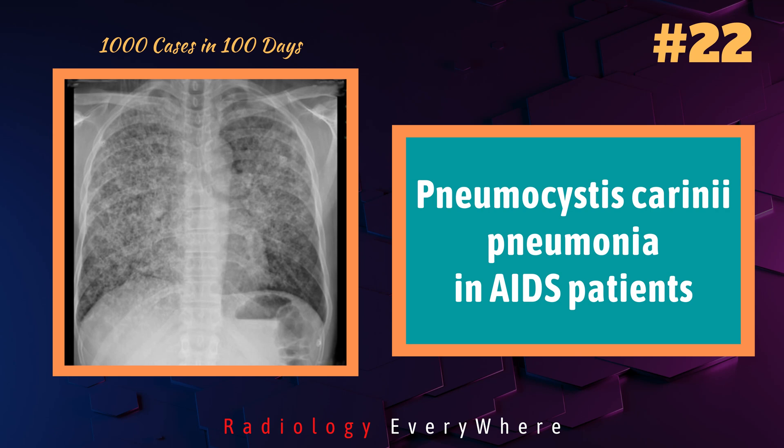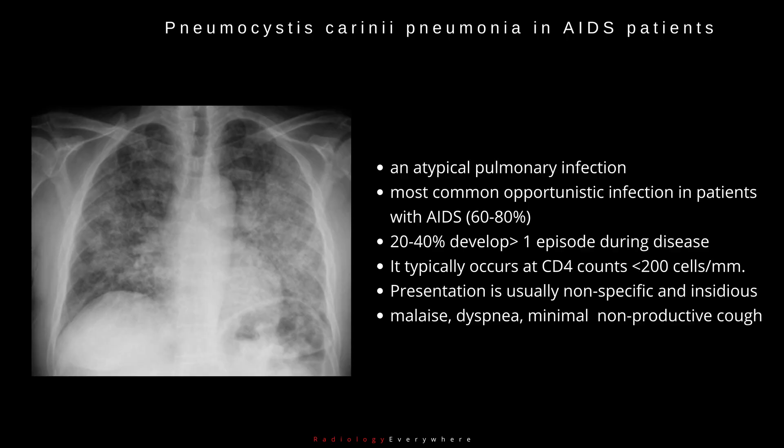In this video, we discuss Pneumocystis carinii pneumonia in AIDS patients. This is an atypical pulmonary infection and the most common opportunistic infection in patients with AIDS, accounting for 60-80% of all opportunistic infections among AIDS patients. 20-40% of patients develop more than one episode during disease.